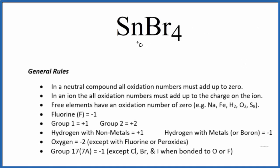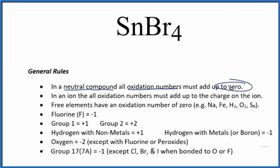In this video, we'll find the oxidation number for tin in tin(IV) bromide, that's SnBr₄. We don't see a negative or a positive sign after the SnBr₄, and that's because it's a neutral compound. All the oxidation numbers are going to add up to zero.